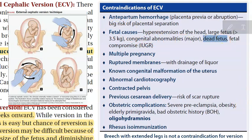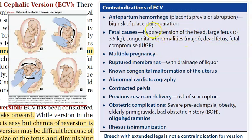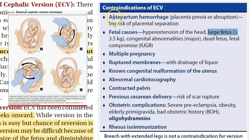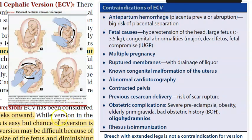Fetal causes that contraindicate ECV: a dead fetus — there is no point turning it; fetal compromise or IUGR — don't make the situation worse; hyperextension of the fetal head; a large fetus. Antepartum hemorrhage — if there is placental abruption, turning can cause further placental separation. Placenta previa, especially central placenta previa, is an absolute indication for cesarean section, so ECV is pointless.